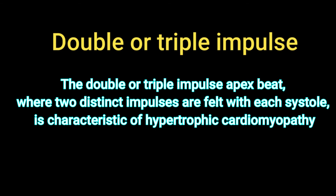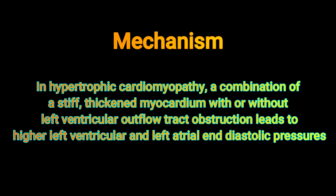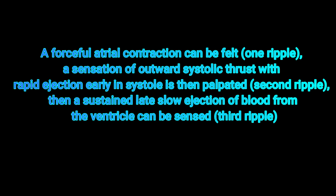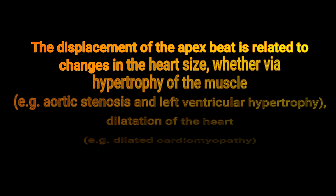The double or triple apex beat has two or three distinct impulses felt with each systole, characteristic of hypertrophic cardiomyopathy. In HCM, a combination of stiff, thickened myocardium with or without left ventricular outflow tract obstruction leads to higher left ventricular and left atrial end-diastolic pressures. A forceful atrial contraction is felt as the first ripple; an outward systolic thrust with rapid ejection early in systole is the second ripple; and a sustained late slow ejection is the third ripple.